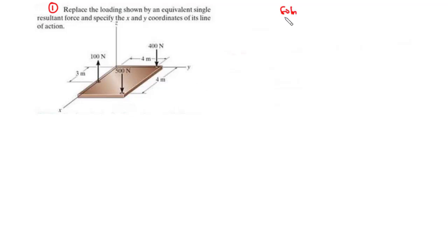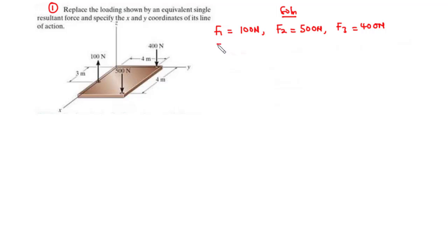We have three forces here. F1 equals 100 N, F2 equals 500 N, and F3 equals 400 N. The line of action of all three forces acts along the z-axis. Since F1 moves vertically upwards, F1z = 100 N. F2 acts vertically downwards, so F2z = -500 N, and F3z = -400 N. All these forces only have z-components.